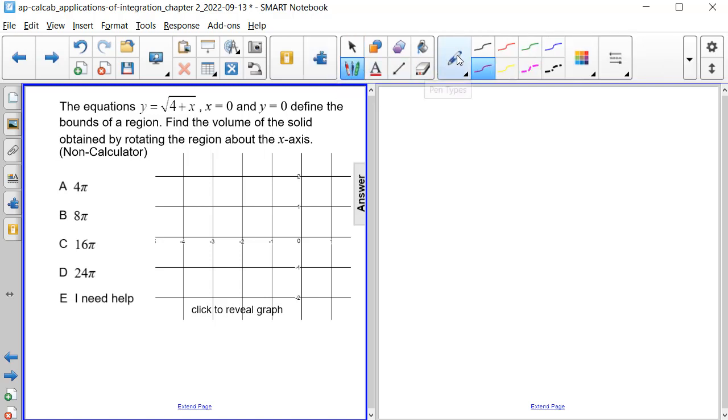Alright, so first let's try to picture what this graph is going to look like. So we have y equals the square root of 4 plus x. The vertex of our square root function is going to be at negative 4. And then at negative 3, it's going to be at 1. And then at 0, it's going to be at 2. So it's going to look something like this as we graph it.